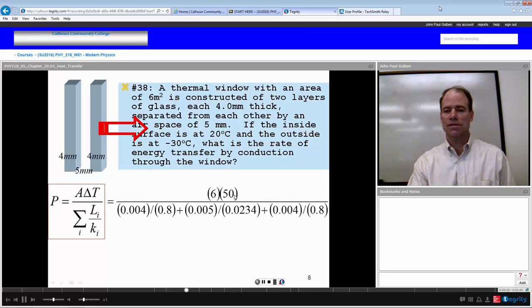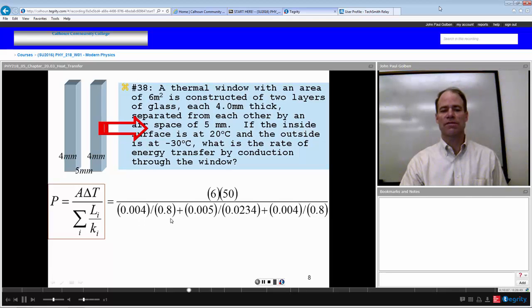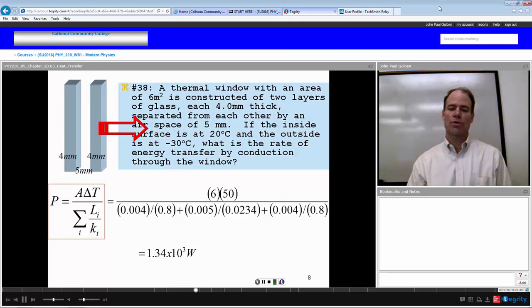We're going from hot to cold. Our power is equal to the area times the change in temperature over the summation of our R values for each of these substances. R values are going to be the thickness divided by their respective thermal conductivities. Area is 6 square meters. We have a temperature difference of 50. And then we have glass, 4 millimeters of it, thermal conductivity for glass is 0.8. We have 5 millimeters of air, thermal conductivity of 0.0234. And we have another 4 millimeters of glass, thermal conductivity of 0.8. And if we figure all this out, we get that our power is 1.34 times 10 to the 3 watts. We have about 1,340 joules per second of energy passing through this window.